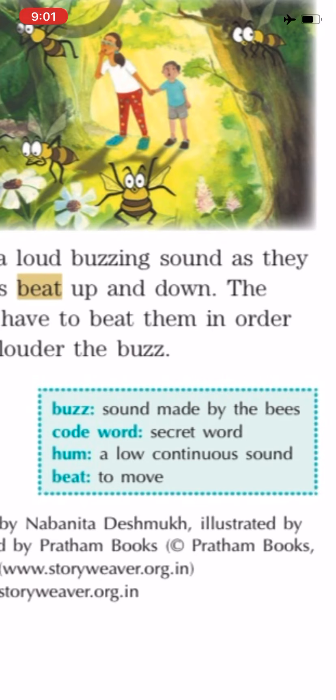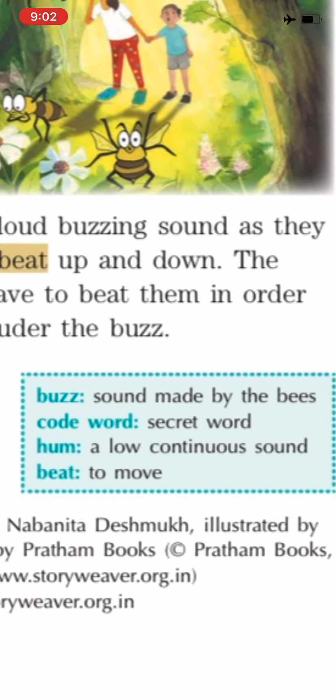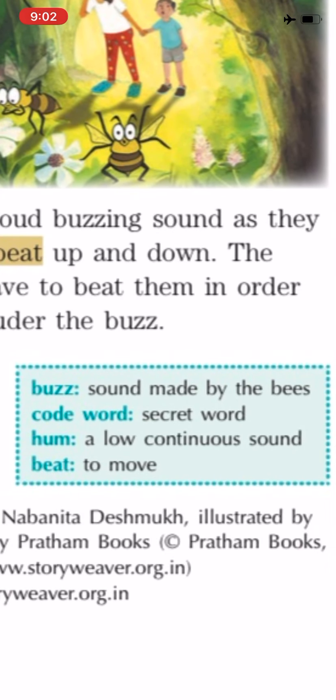The next word is 'codeword', that is a secret word. We all have some codewords — we use codewords with our friends. If you want to communicate something to your friend, आपने कुछ code word रखते हो पहले से. You keep a secret word — code word — कि इसकी जगह ये बोलूंगा, तो समझ जाना कि मैं ये बोल रहा हूं. You code your message to keep it a secret — इसलिए उसको बोलते हैं secret word.